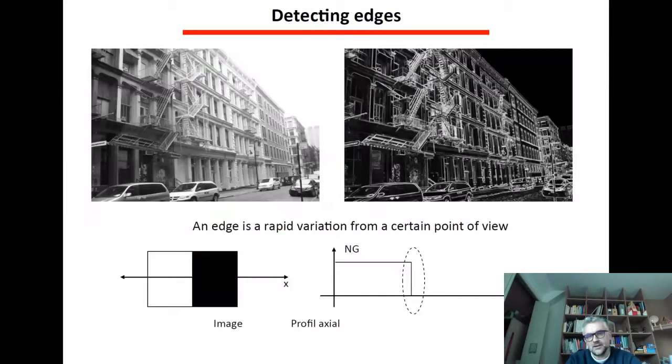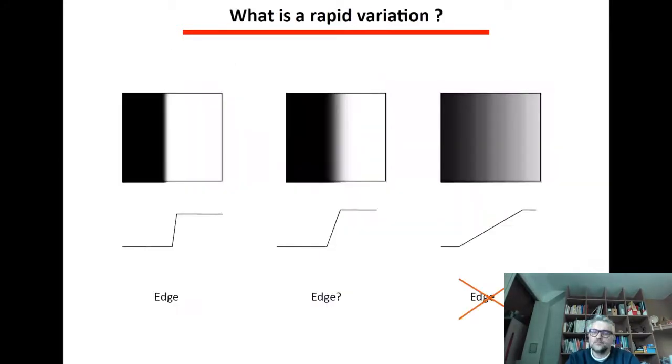So let's start with detecting the edges. An edge is a rapid variation from a certain point of view. So here for instance we have a very edgy variation of gray levels here, still variation which is still fast but here the variation of gray level is spread out through the entire image. We cannot call this honestly an edge.